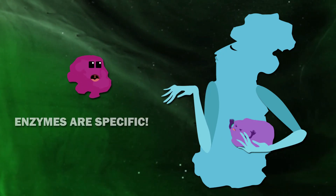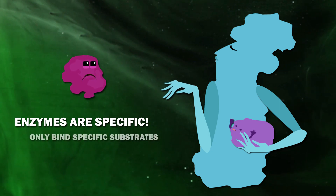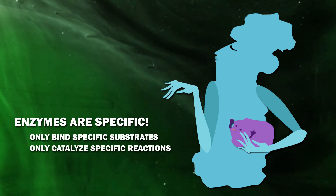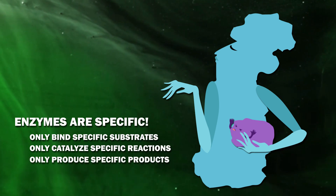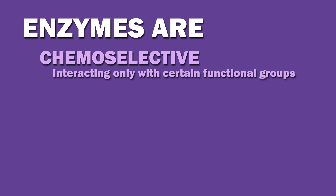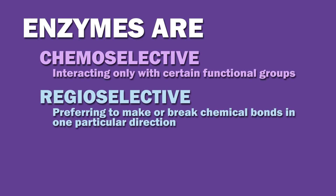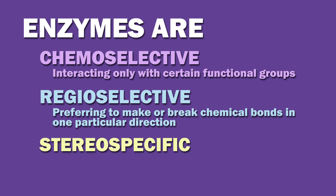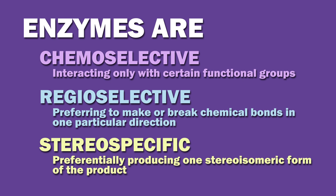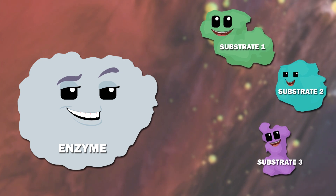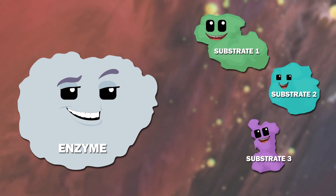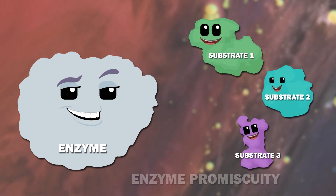Unlike many other catalysts, enzymes are specific. They only bind specific substrates, they only catalyze specific reactions, and they only produce specific products. Enzymes are chemoselective, interacting only with certain functional groups. They are regioselective, preferring to make or break chemical bonds in one particular direction, and they are stereospecific, preferentially producing one stereoisomeric form of the product. Enzymes that have a broader range of specificity and are able to bind to more than one kind of substrate display enzyme promiscuity.